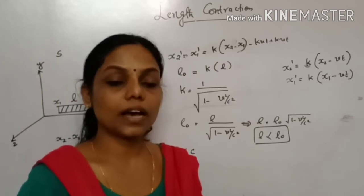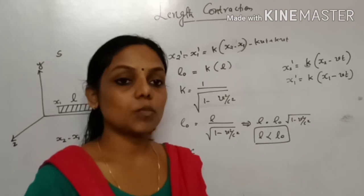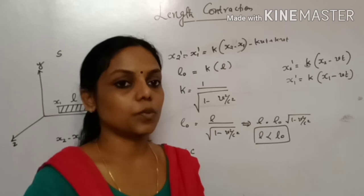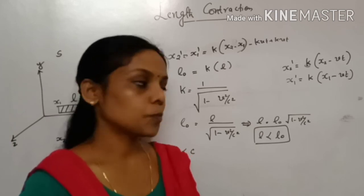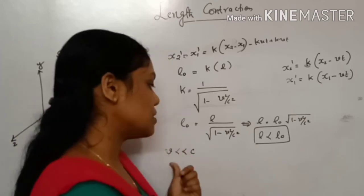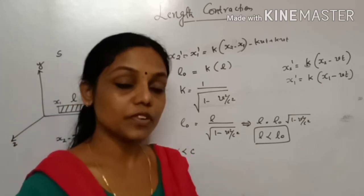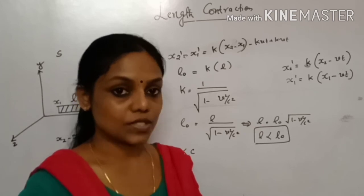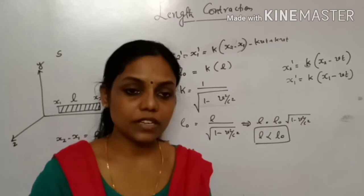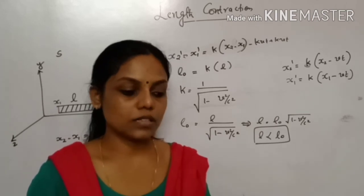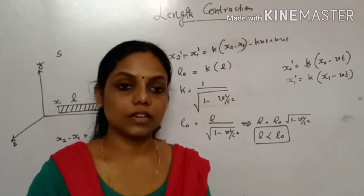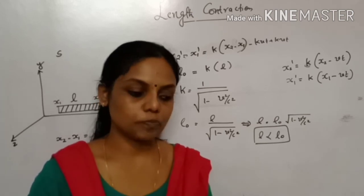Length contraction becomes significant only when the velocity of the object is comparable to the speed of light. When V is very much less than C, the quantity V²/C² is very very small, so 1 minus that quantity is approximately equal to 1, meaning L is approximately equal to L0.